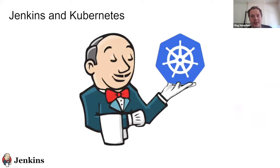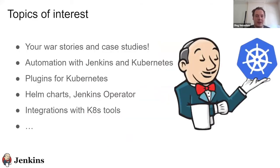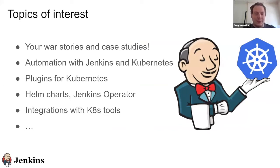The topic today is about Jenkins and Kubernetes. Kubernetes is definitely getting more and more popular and in the Jenkins project we want to ensure that Jenkins runs smoothly on Kubernetes and is part of the Kubernetes ecosystem. There is a lot of ongoing work including a roadmap. We want to talk about how to use Jenkins on Kubernetes and welcome case studies or sharing how to automate your flows with Jenkins and Kubernetes.